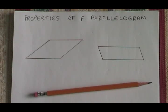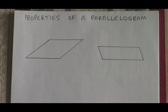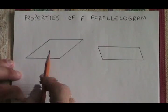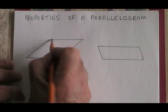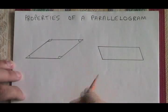The properties of a parallelogram are as follows. A parallelogram is a quadrilateral, so the four angles inside it have to add up to 360 degrees.